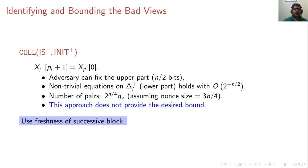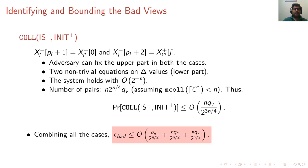To resolve this, we consider freshness of successive blocks. Instead of considering just one collision, we consider successive collisions — collision at block pi+1 and also at block pi+2. The adversary can again fix the upper part in both cases, but now there are two non-trivial equations on delta values. The system of equations holds with probability 2^(-n). Using the multi-collision bound, the probability of this joint event is bounded by n*Q_V / 2^(3n/4). Combining all cases, we get a total epsilon_bad of order sigma_E / 2^(n/2). The ratio of interpolation probabilities is bounded by Q_V / 2^n + 2*n*sigma_V / 2^(n/2). Combining the bad and ratio analyses via the H-coefficient technique completes the security proof.